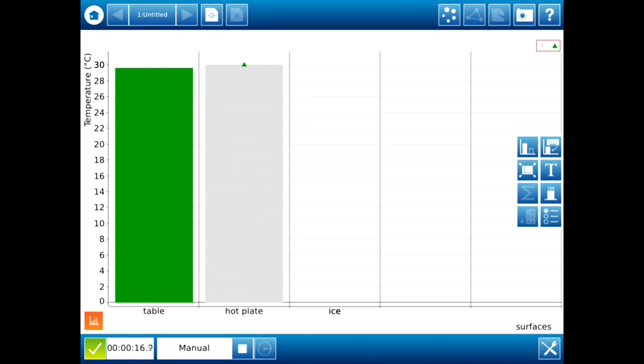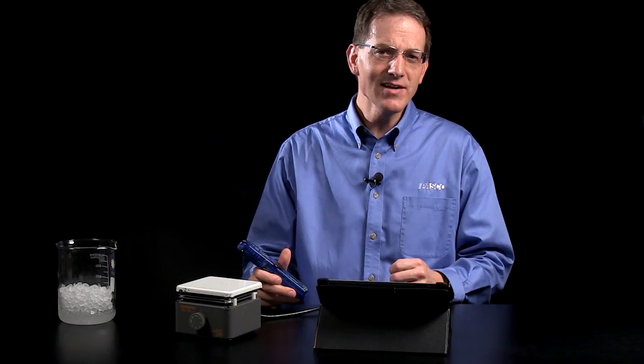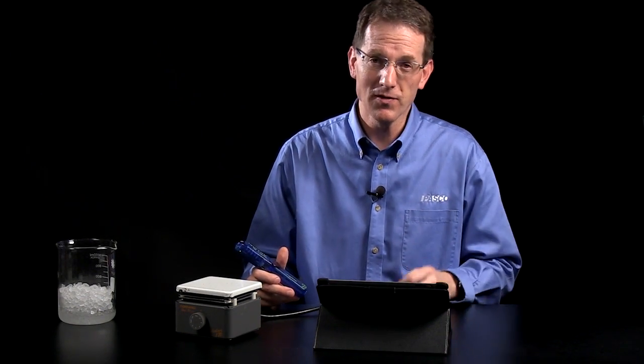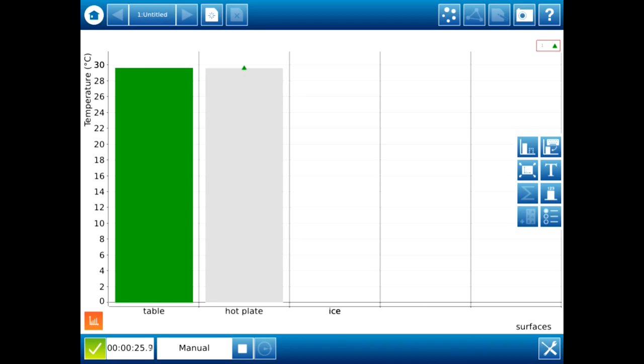You'll notice that the bar immediately changes to a color, and that's a sign to the students that they have both the independent and the dependent variables for that bar set. They have a name for the bar. They also have a value for the bar, so it gives them a color indicating that it has a complete data set.